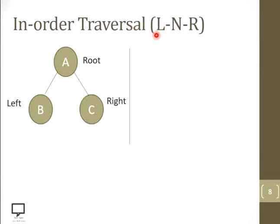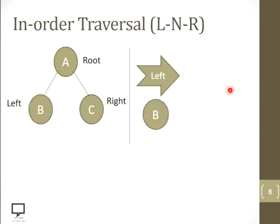In-order traversal follows the sequence: left, root node, and right. Starting from the root node, we check whether it has a left child. Yes, it has a left child, so we traverse the left child and then move back to the root node. However, in a tree data structure, there is no backlink available from the lower level to the higher level — from child to parent. So how we return back to the previous node is something we are going to address with the help of different algorithms in the next slide.